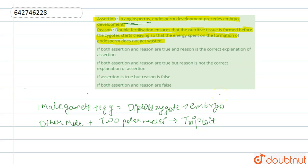Double fertilization ensures that the nutritive tissue is formed before the zygote starts cleaving, so that the energy spent on the formation of the endosperm does not go to waste in the case that the fertilization fails.